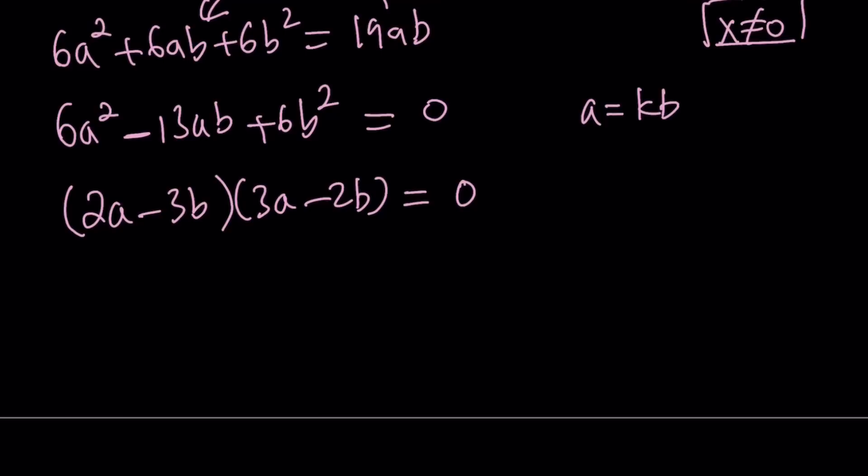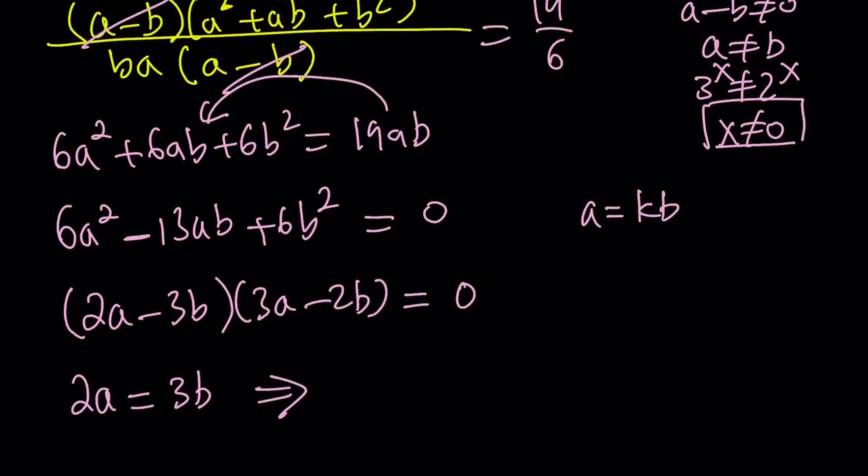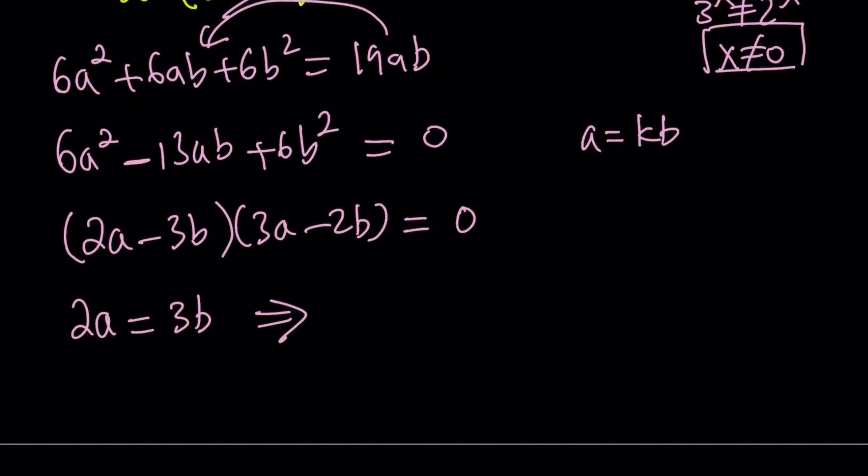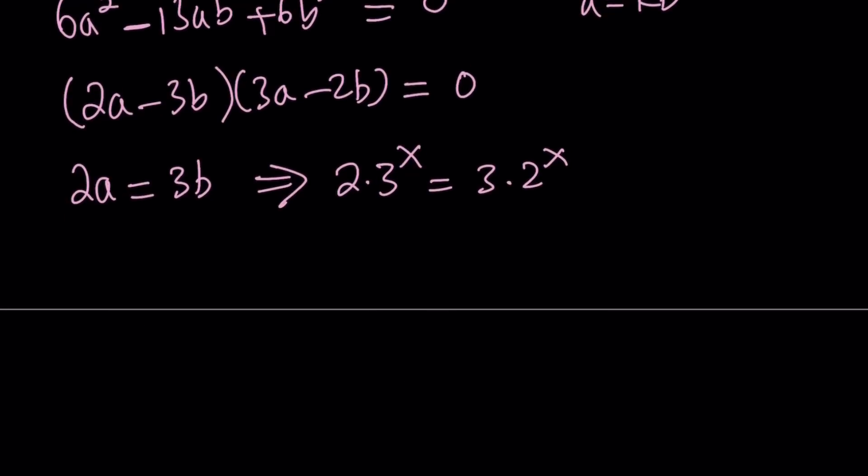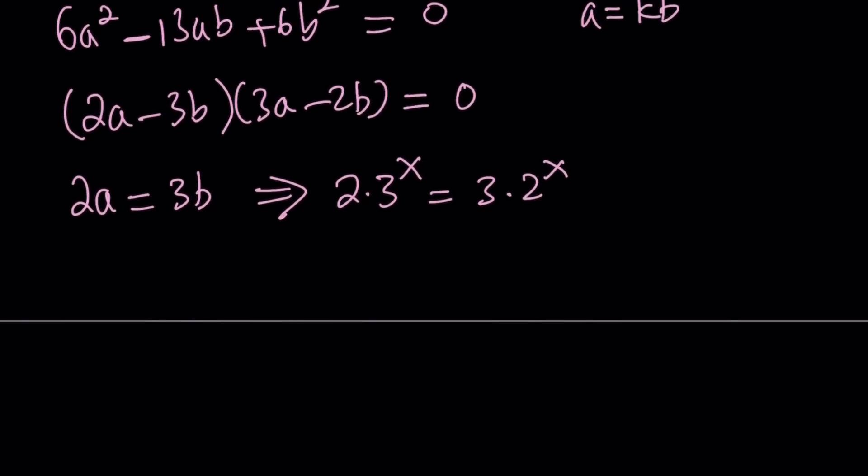Now, what does this give me? It gives me two equations. First of all, 2a minus 3b is equal to 0, which means 2a is equal to 3b. Let's back substitute. Remember, a is 3 to the power x. So 2 times 3 to the power x equals 3 times 2 to the power x. That's kind of like a weird expression. But if you think about it, you'll probably realize, hey, x equals 1 works because 2 times 3 is the same as 3 times 2.